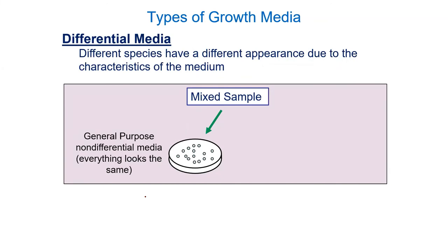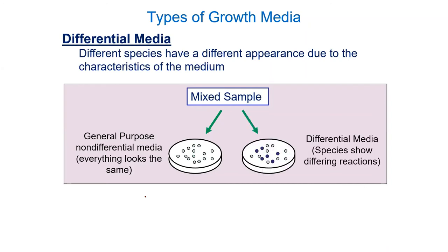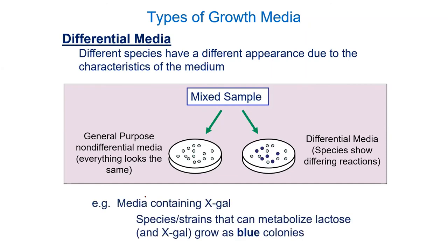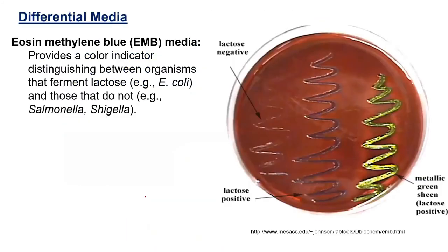Differential media is similar to selective except it doesn't kill things — it makes some organisms look a certain color. For example, X-gal (a short form for a compound) turns organisms that can digest lactose blue when they metabolize it. Another differential medium is EMB — eosin methylene blue — where E. coli grows a really cool metallic green color.